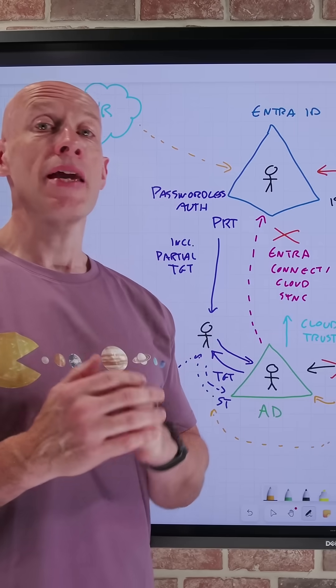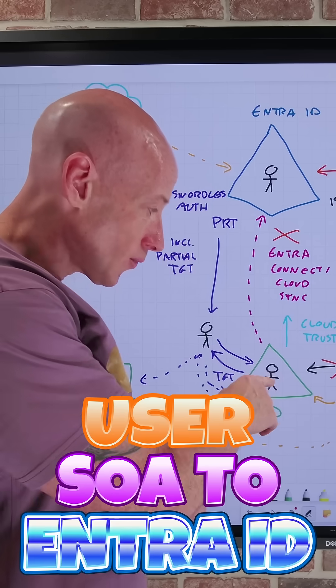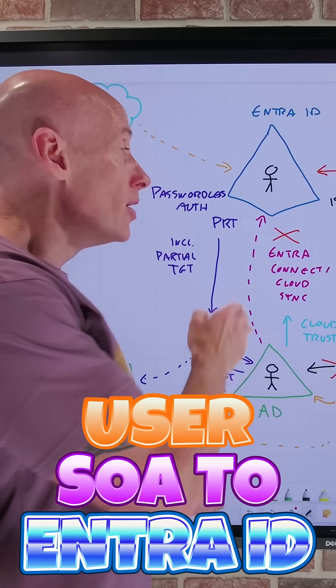In this short, we're going to very quickly cover the ability to move the user source of authority from Active Directory to Entra ID.